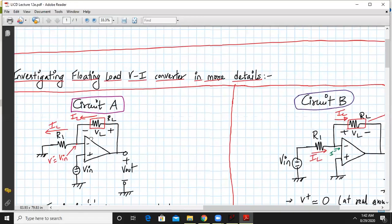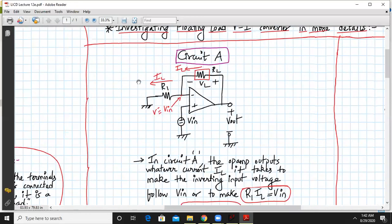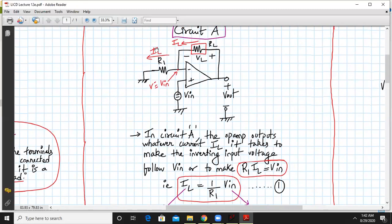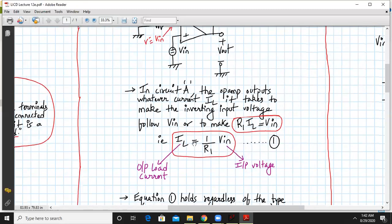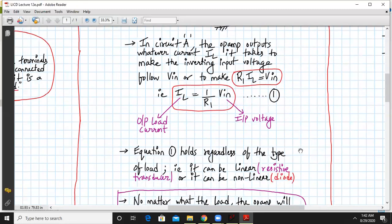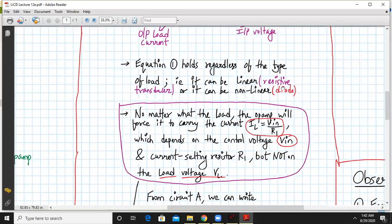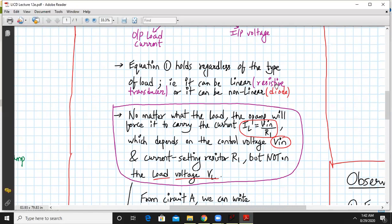Let us analyze this floating load V2I converter in more detail. Let this be circuit A. We have already derived the formula. In circuit A, the op-amp outputs whatever current IL it takes to make the inverting input terminal follow VIN. The same current flows through R1 and RL. We have already derived that IL equals 1 upon R1 into VIN. This equation will hold regardless of the type of load.